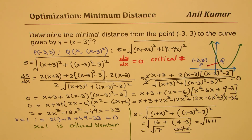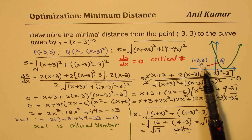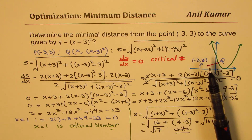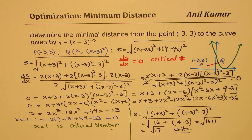That is how we solve this problem. This critical number gives us a minimum distance because any other point on the curve would yield a much larger distance. I hope it makes sense. Feel free to write your comments and share your views. If you like and subscribe to my videos, that would be great. Thanks for watching and all the best.